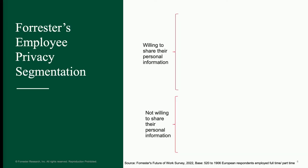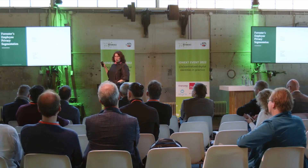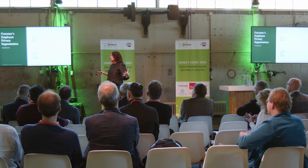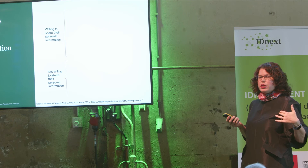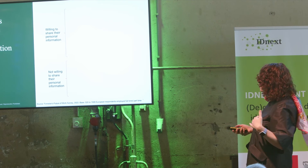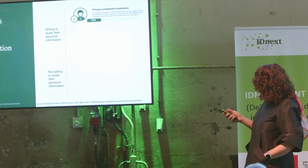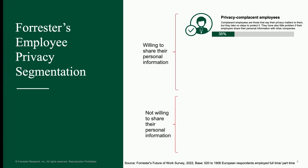Where does this get us? This is the privacy segmentation for employees that we've developed. There are kind of two broad categories: employees who are willing to share their personal information and the ones that aren't. The question about what would motivate you to share more information than is required is one of the pivotal questions for determining this segmentation. There are five segments in total and I'll go through each of them in turn.